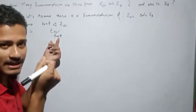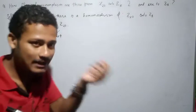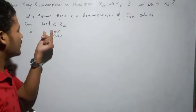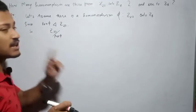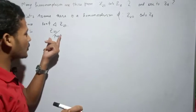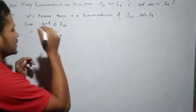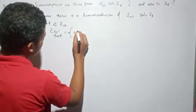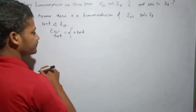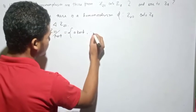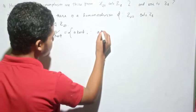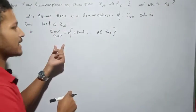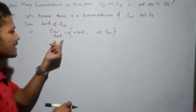This factor group Z20 by kernel of φ is the set of all left cosets — or right cosets — of kernel of φ in Z20. That is, the set of all cosets of the form A plus kernel of φ, such that A belongs to Z20.